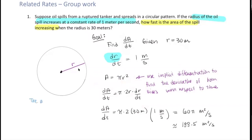The area of the spill is increasing at a rate of 188.5 meters squared per second when the radius of the spill is 30 meters.